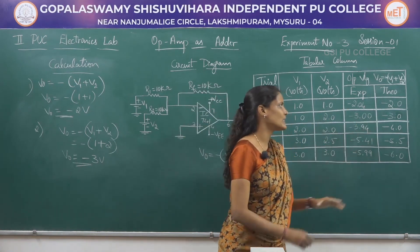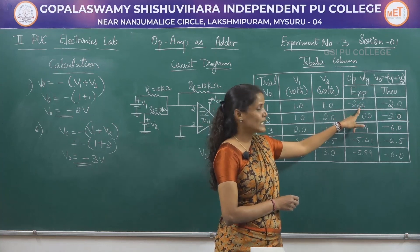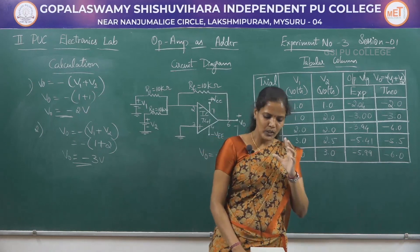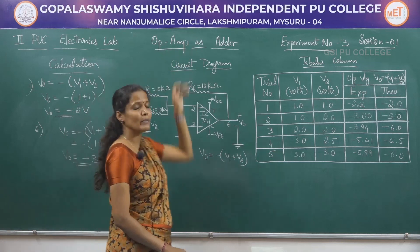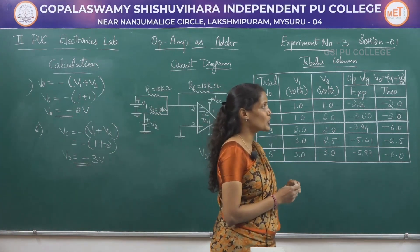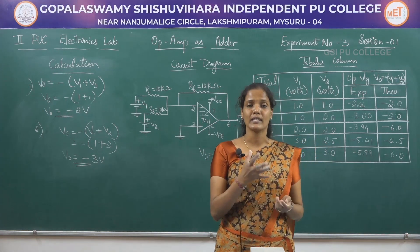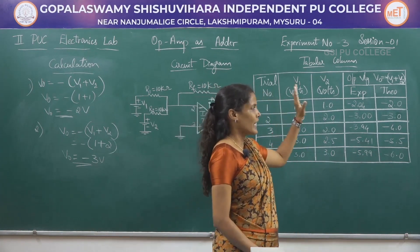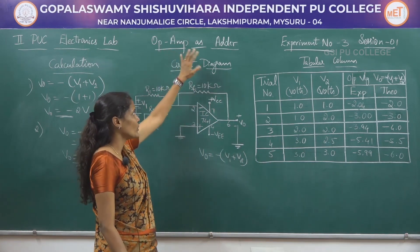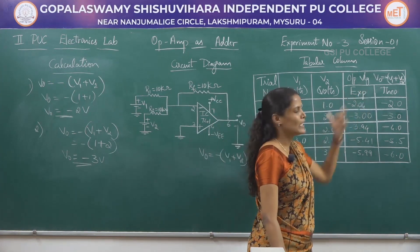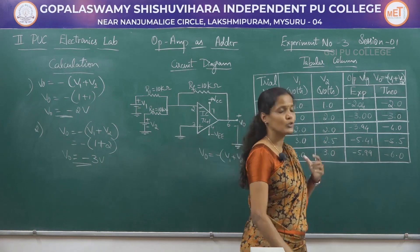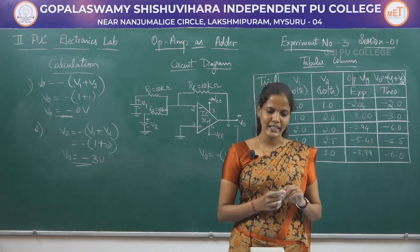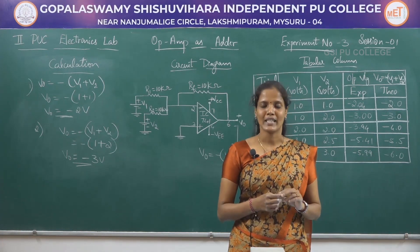Comparing the two columns, the readings are almost the same. Minus 2.04 is the experimental value whereas the theoretical value is minus 2.0 — these two readings are almost equal. With this we have constructed a circuit using an op-amp which can be used as an adder. In the next session — session two of the same third experiment — we will construct a circuit where the op-amp can be used as a subtractor. Thank you.